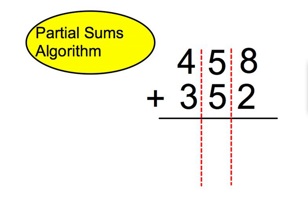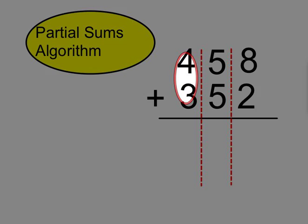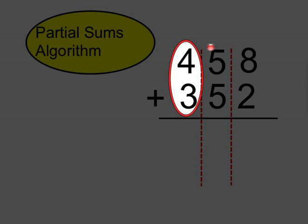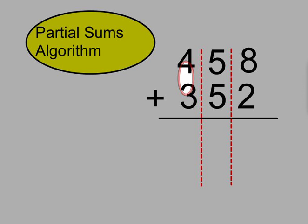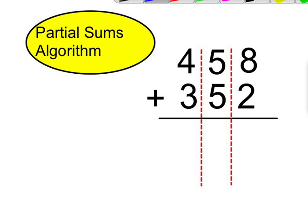Unlike in most traditional methods where you would start in the smallest place value spot, for partial sums we start in the largest place value which here is the hundreds. So students would think of 400 plus 300 which is 700.